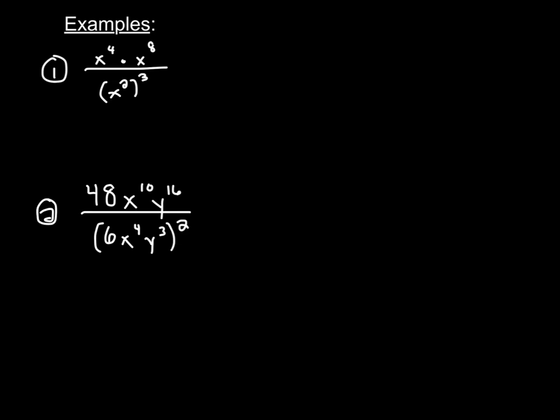Let's take a look at some examples where we have to apply these rules. In the first example, we have x to the fourth times x to the eighth in the numerator. Whenever you're multiplying two terms with the same base, you just add the exponents — so four plus eight is twelve, giving us x to the twelfth. In the denominator, we have x squared raised to the third power: a power raised to another power means we multiply, so two times three is six, giving x to the sixth. Finally, dividing those terms, we subtract the exponents: twelve minus six is six, leaving us with x to the sixth.